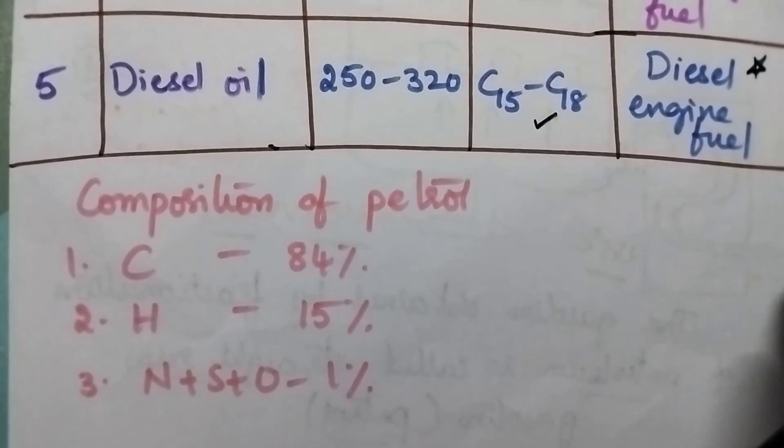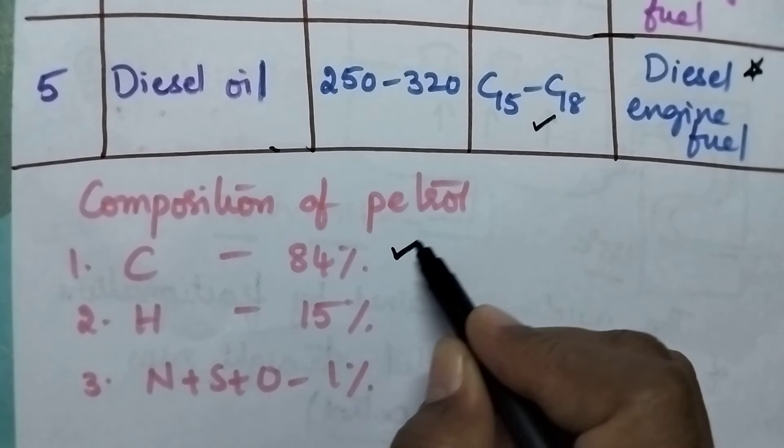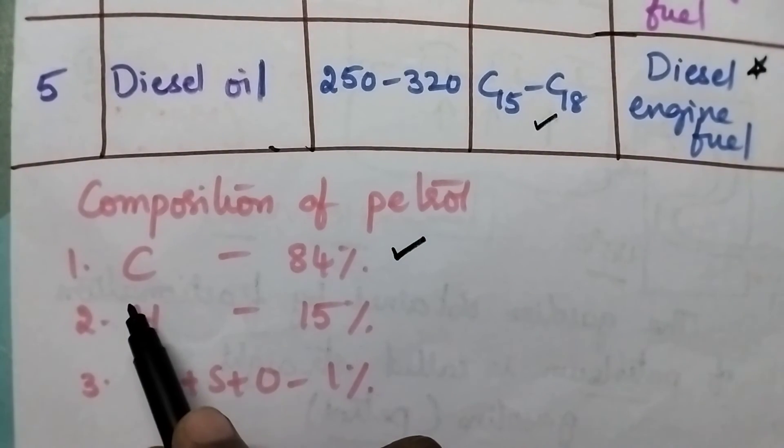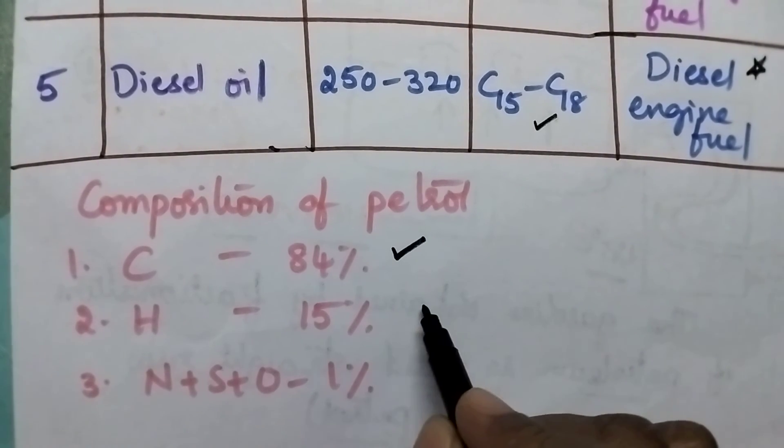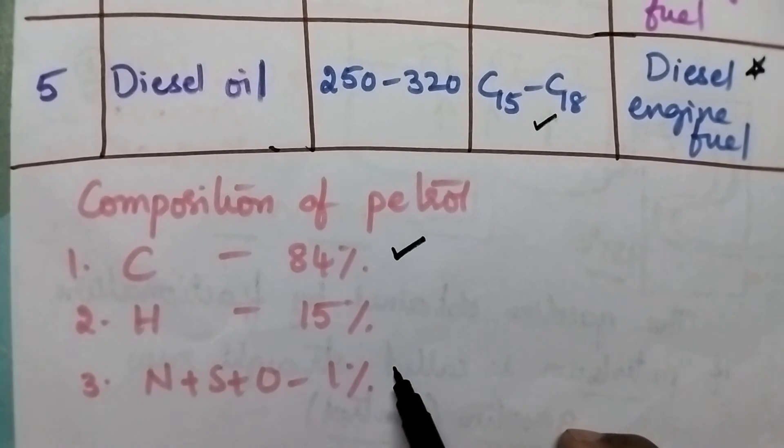Let us see what is the composition of petrol. In general, fuels consist of carbon as the major element. The composition of carbon is 84%, hydrogen is 15%, and nitrogen, sulfur, and oxygen together contribute to 1%.